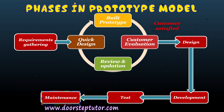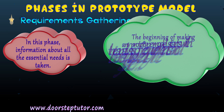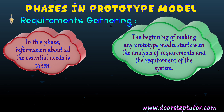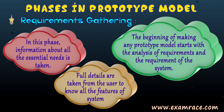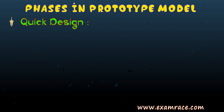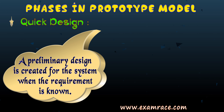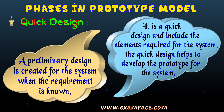The first phase is requirement gathering. We must identify the basic needs of the customer — what the final output should be. Full details are taken from the user so we can create a perfect software according to their requirement. The next step is quick design: once the requirements are gathered and concluded, a quick design is created that includes all the necessary elements required for the system.